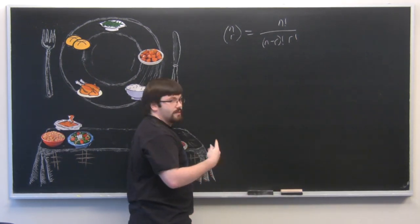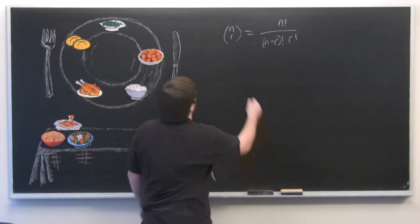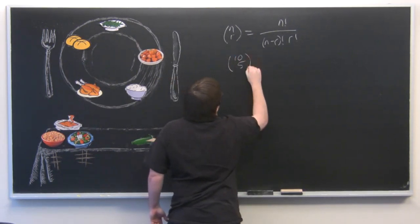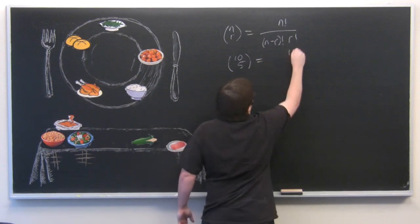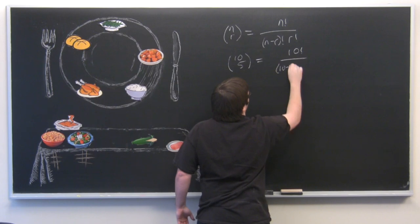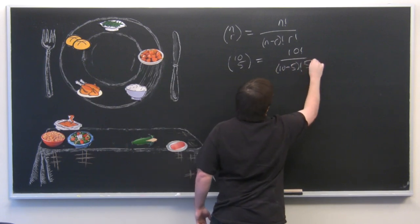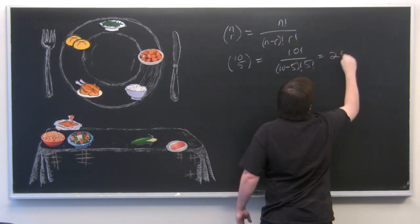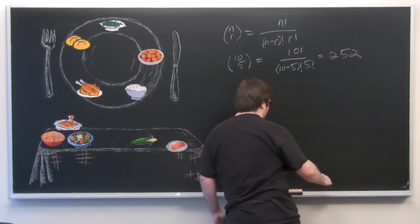n choose r for combinations is equal to n factorial over n minus r factorial times r factorial. So in our case, we have n is ten, ten items to pick from, and r is five for the five items we put on our plate. So this just equals ten factorial over ten minus five factorial times five factorial, which equals 252 combinations.